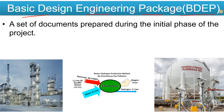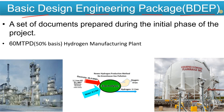BDEP is basically a set of documents that is prepared during the initial phase of a project. Let's suppose your company wins a project — say a 60 MTPD hydrogen manufacturing plant — and you have to do the engineering, procurement, and commissioning for that plant. A process engineer will prepare a bunch of documents during the initial phase of the project, and that bunch of documents is called the BDEP, that is the Basic Design Engineering Package.